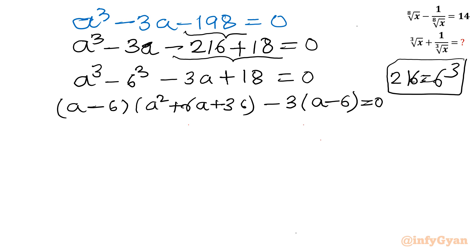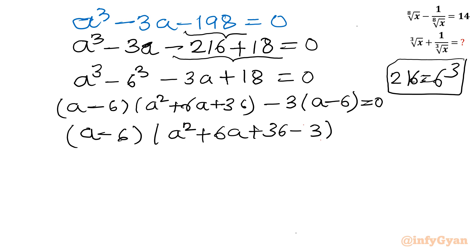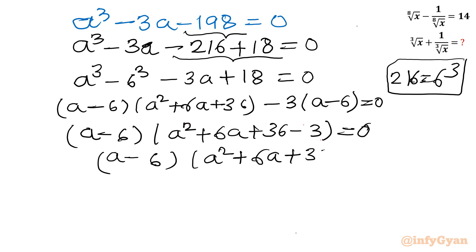Taking (a minus 6) as a common factor overall: (a minus 6)(a squared plus 6a plus 36 minus 3) equals 0, which simplifies to (a minus 6)(a squared plus 6a plus 33) equals 0. By the zero product law: a minus 6 equals 0, giving a equals 6.